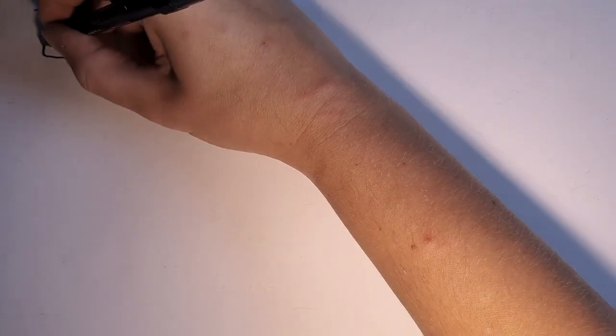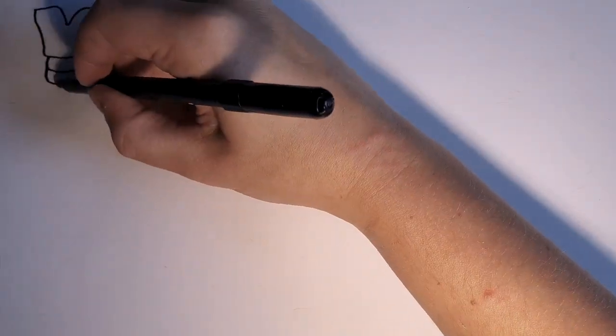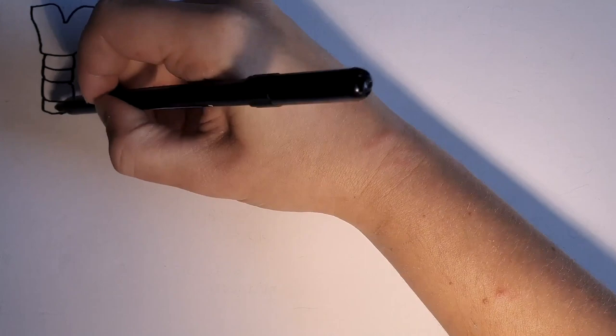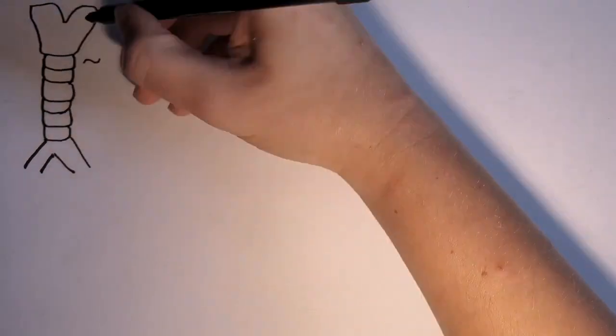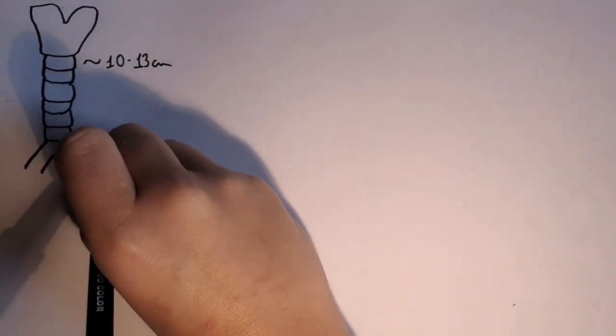The trachea is a T-shaped semi-rigid tube that descends from the larynx in the neck to the mediastinum. It is 10 to 13 centimeters long and it ends with a bifurcation called carina into the two main bronchi at the level of T4.